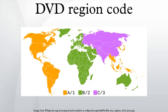Many websites provide instructions for different models of standalone DVD players to hack and obtain their factory codes. Older computer DVD drives use a RPC-1 firmware, which means the drive allows DVDs from any region to play. Newer drives use a RPC-2 firmware, which enforces DVD region coding at the hardware level. These drives can often be reflashed or hacked with a RPC-1 firmware, effectively making the drive region-free, though this may void the drive warranty.